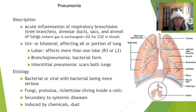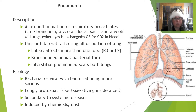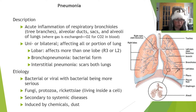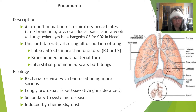We have now hit the lungs. Pneumonia is an acute inflammation of the respiratory bronchioles — the tree branches of the lungs — alveolar ducts, sacs, and alveoli, where gas exchange occurs from O2 for CO2. Pneumonia can be unilateral or bilateral, meaning one or both lungs, and does not have to take over the entire lung. Lobar pneumonia affects more than one lobe. The right lung has three lobes and the left has two — your heart is on your left, so there isn't room for three lobes.